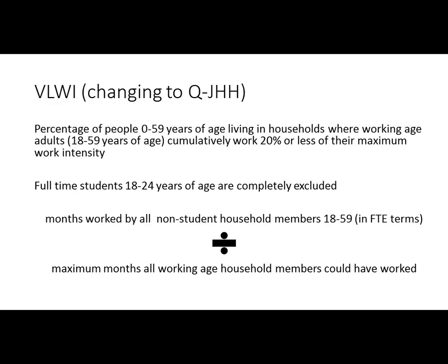The second of the three components of AROPE is very low work intensity, or VLWI. The EU has been gradually shifting its terminology toward 'quasi-jobless households,' but for now they still call it VLWI. To calculate VLWI, you get the percentage of people under 60 years old who live in households where the working-age adults, those 18 to 59, together cumulatively work 20% or less of their maximum work intensity. Full-time students aged 18 to 24 are completely excluded before this calculation is done.